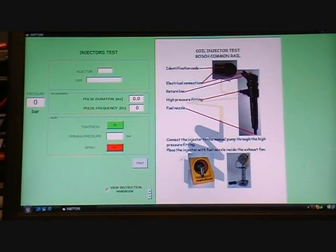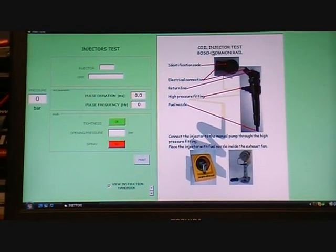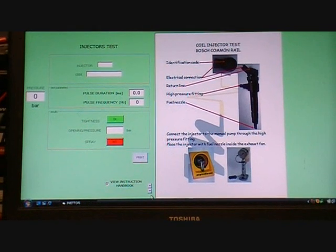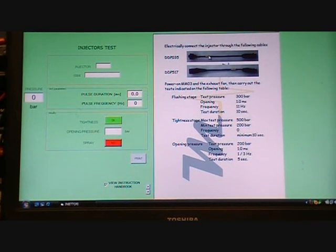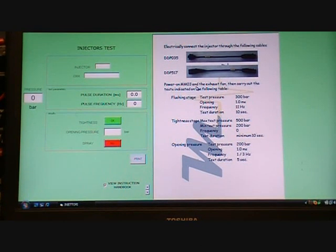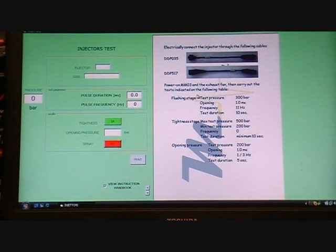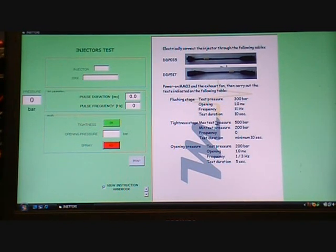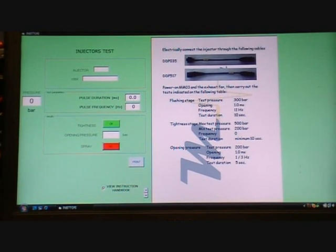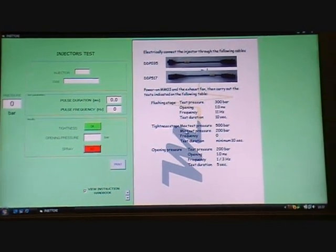We've selected coil injector test, Bosch common rail. If we scroll down through the manual here it gives us information about which cable to use, and then it gives you kind of a test data for testing the injector. As you can see it tells you here to do the flushing stage, tightness test.